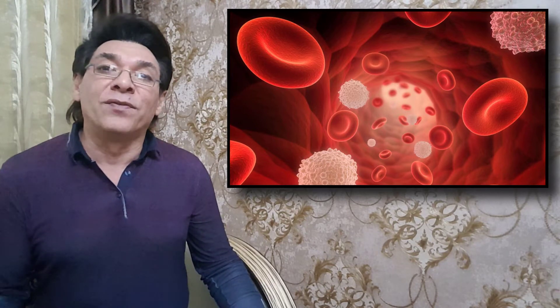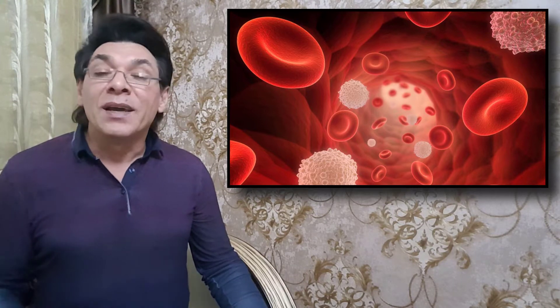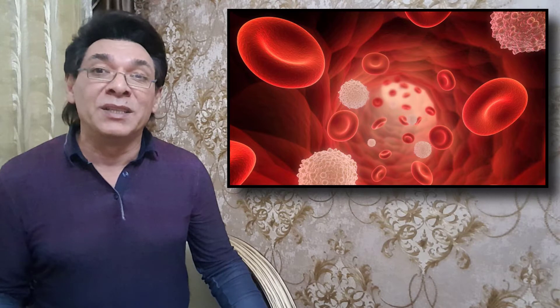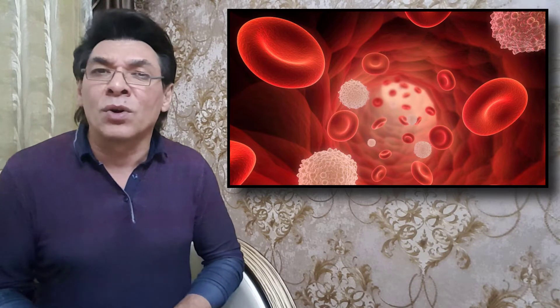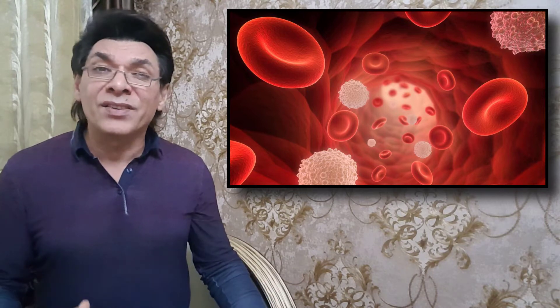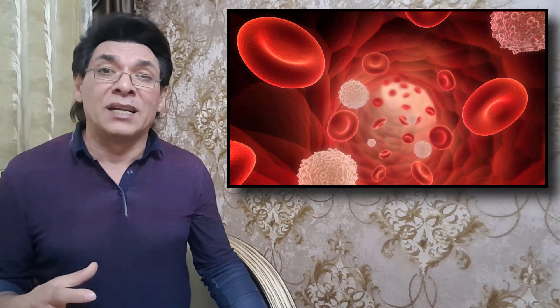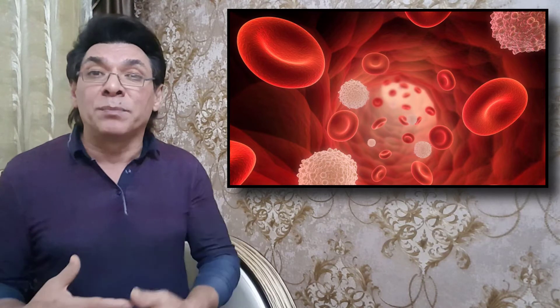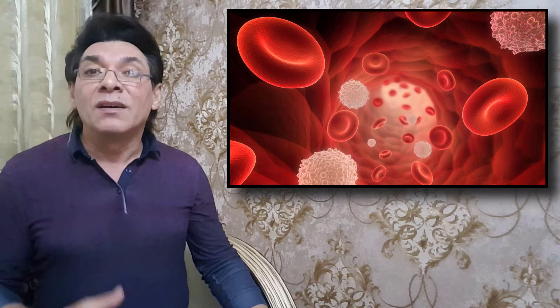For instance, blood moves carbon dioxide to the lungs for exhalation, and various waste products are transported to the kidneys and liver for excretion in the form of urine or bile. Defense: many types of WBCs protect the body from external threats such as disease-causing bacteria that have entered the bloodstream through a wound. Other WBCs seek out and destroy internal threats, such as cells with mutated DNA that could multiply to become cancerous, or body cells infected with viruses.